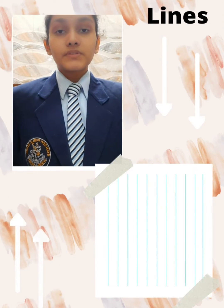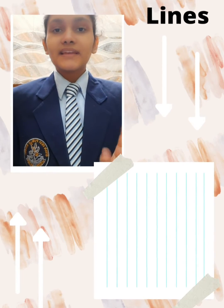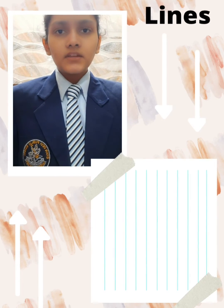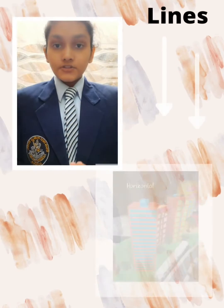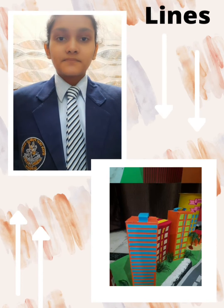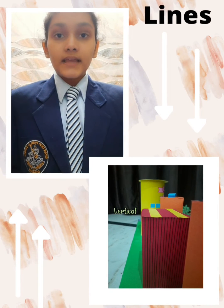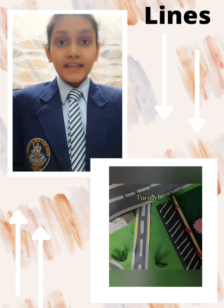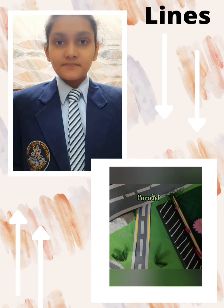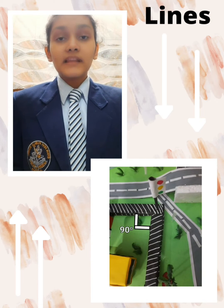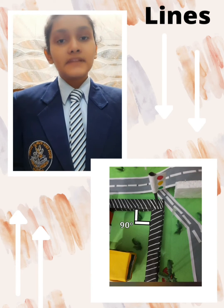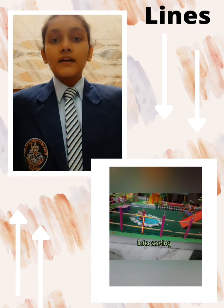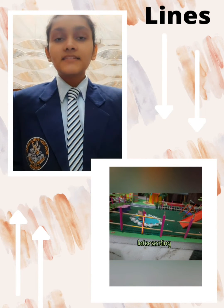A straight path which goes in two directions is a line. In this project, we can notice many lines: horizontal lines, going from left to right; vertical lines, going from top to bottom; parallel lines, which are lines that never meet; perpendicular lines, which are lines making an angle of 90 degrees; and intersecting lines, which are when two or more lines meet.